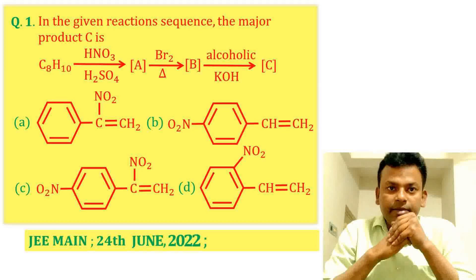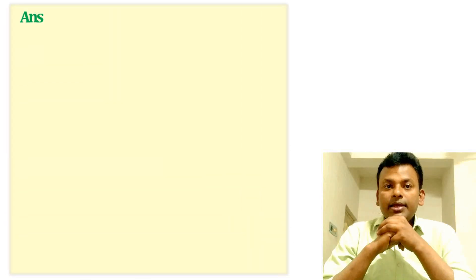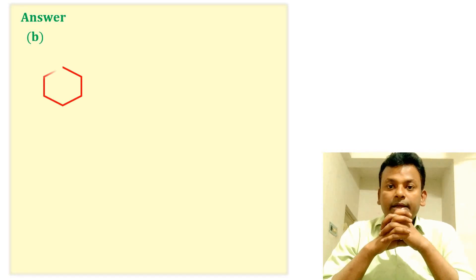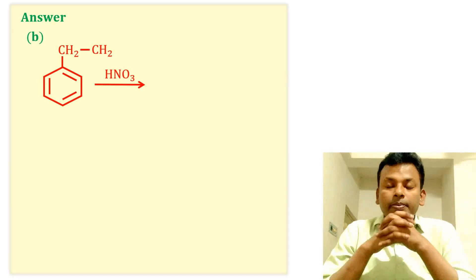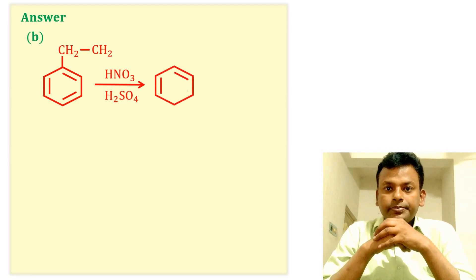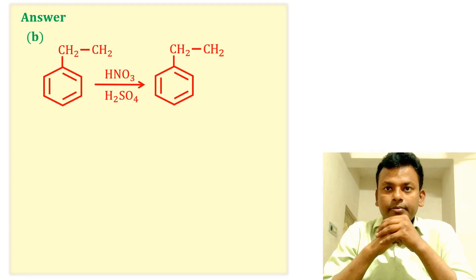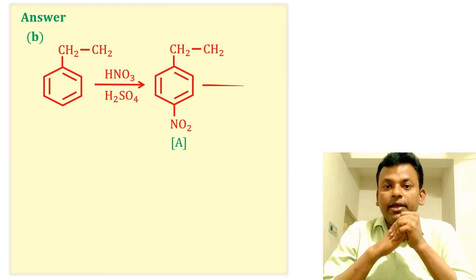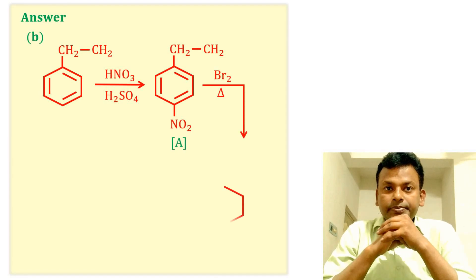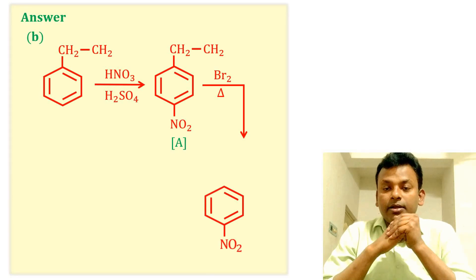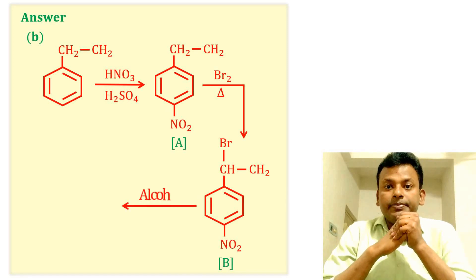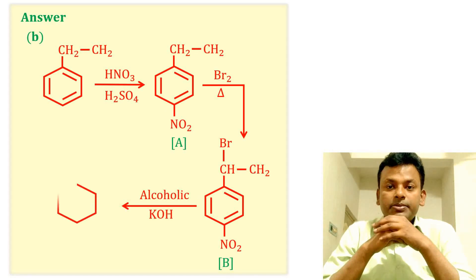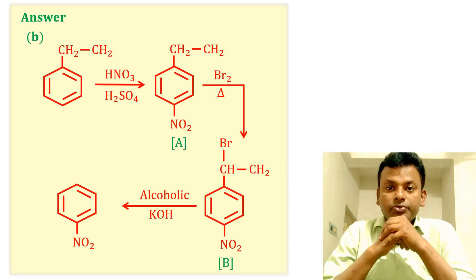Question 1 was set in JEE Main 24th June 2022 morning shift. Answer: option B is correct. Phenylethyne reacts with concentrated HNO₃ and concentrated H₂SO₄ to give product A. Then A reacts with Br₂ and heat to give product B — that is bromination, and the benzylic position is more reactive. Then B reacts with alcoholic KOH to give the final product C. So option B is the correct answer.